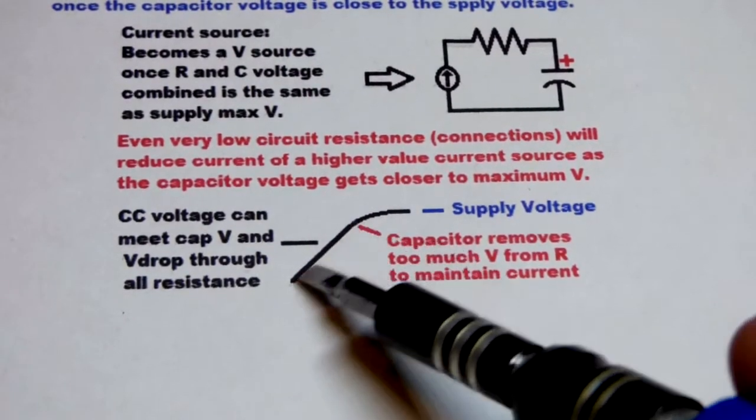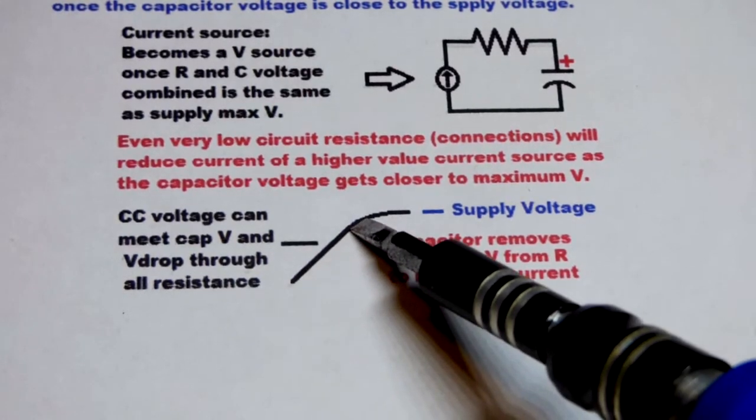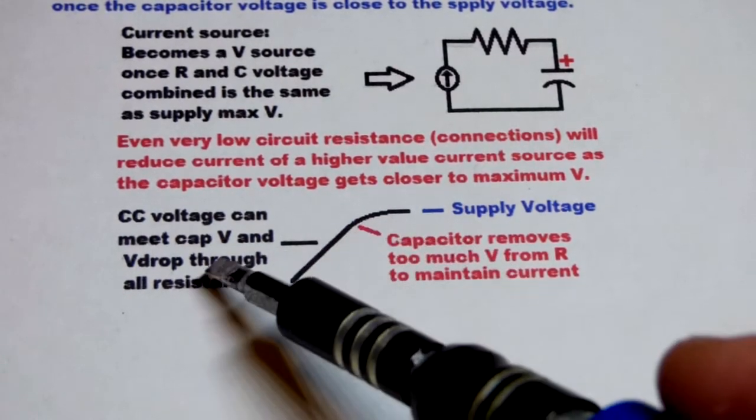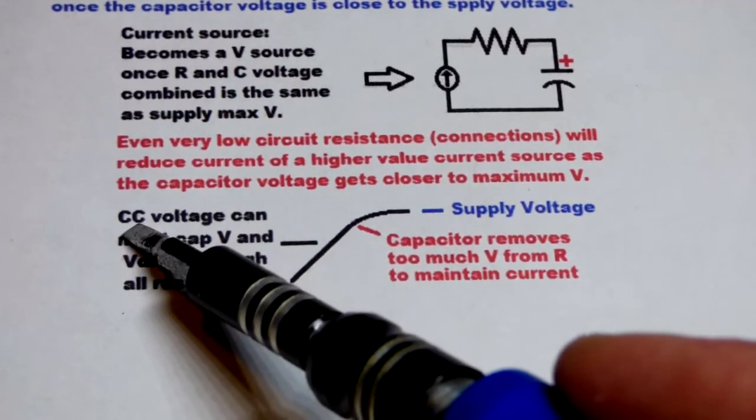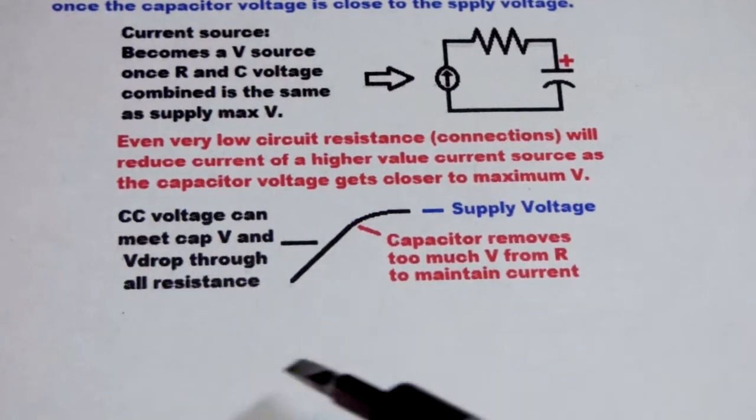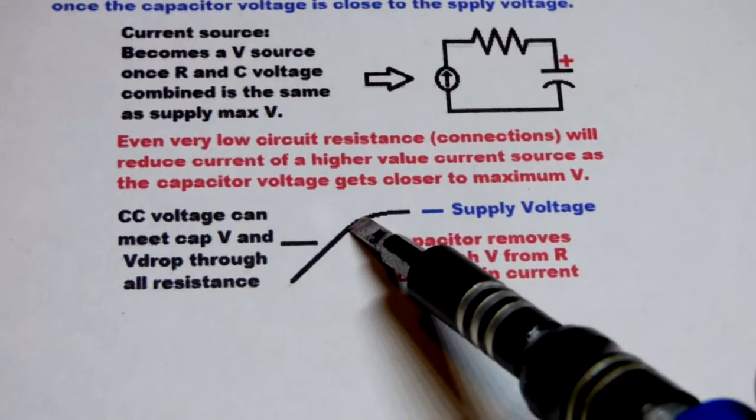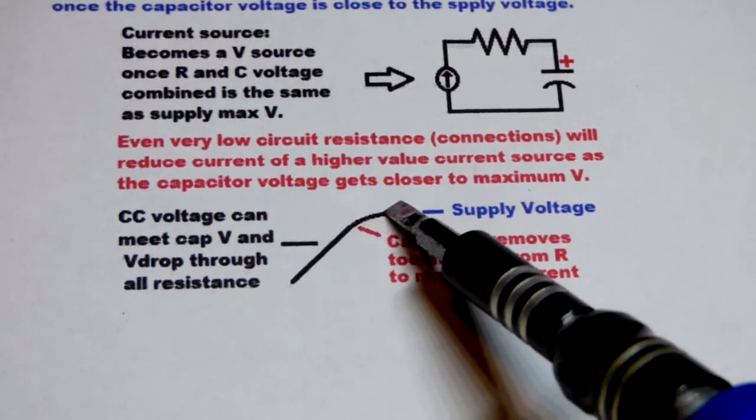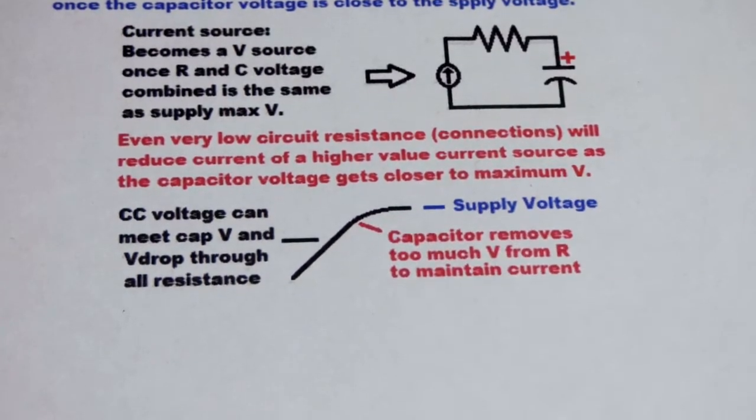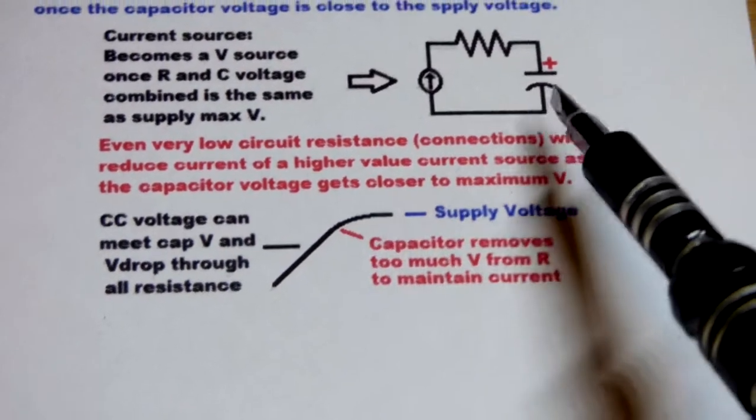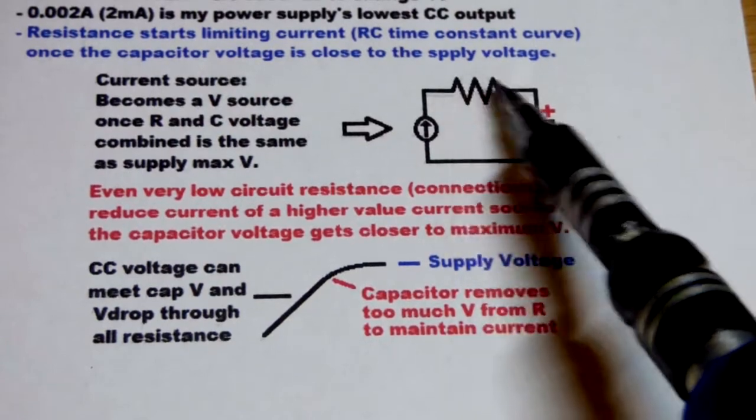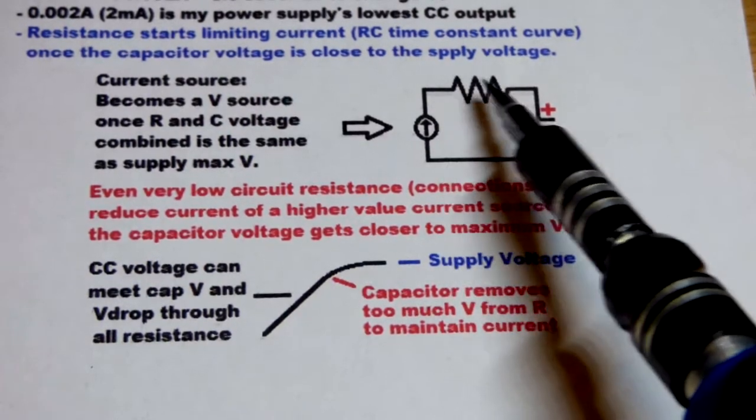We had the ramp. As long as the voltage is changing steadily over time, then you know it's constant current. The same amount of current is going into the capacitor over time. Once the ramp starts bending into a curve, this is actually the RC time constant.